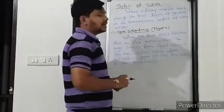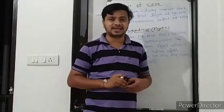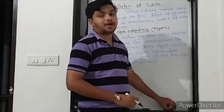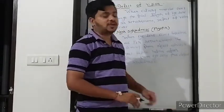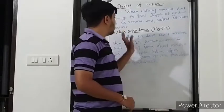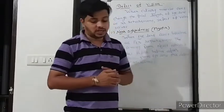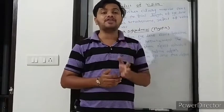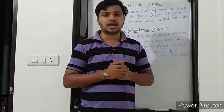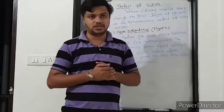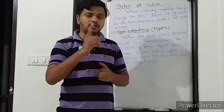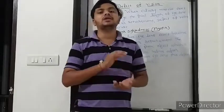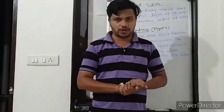The first one is nearsightedness. The second one is farsightedness. And the third one is presbyopia. Each type has a specific format that can be asked in the exam. We will study them one by one.